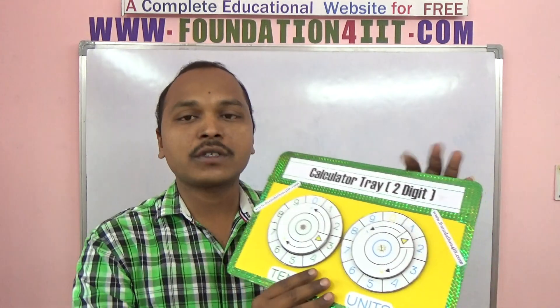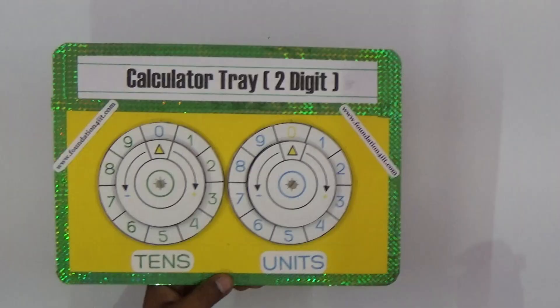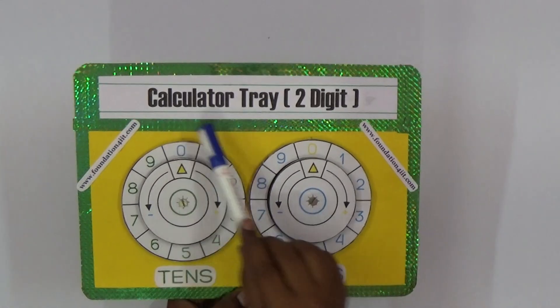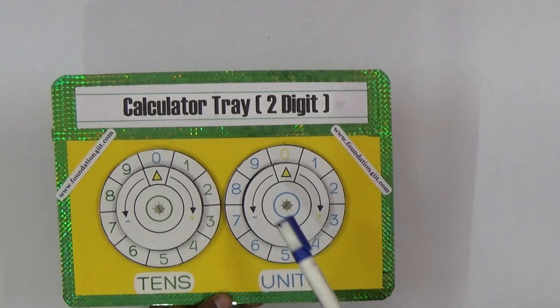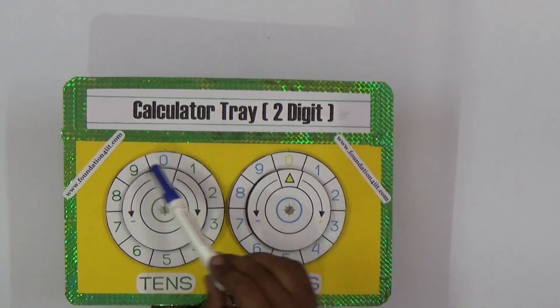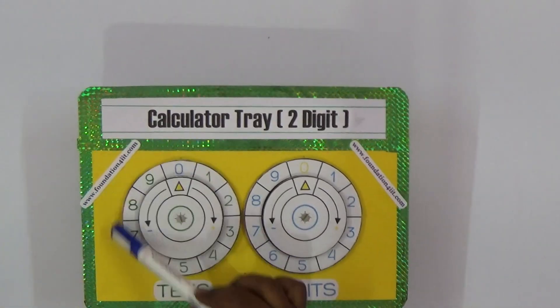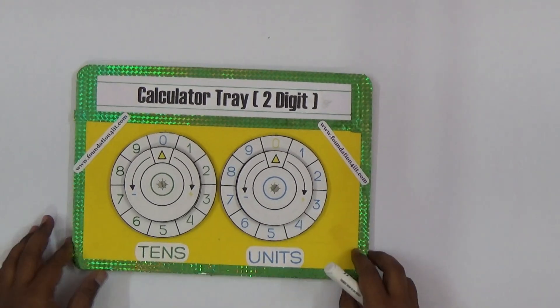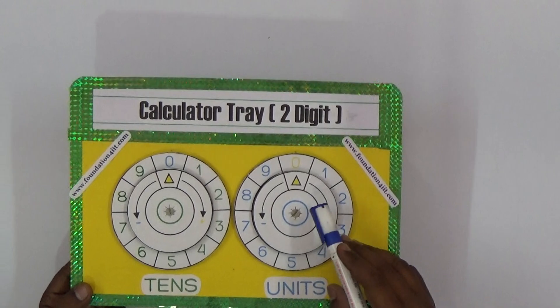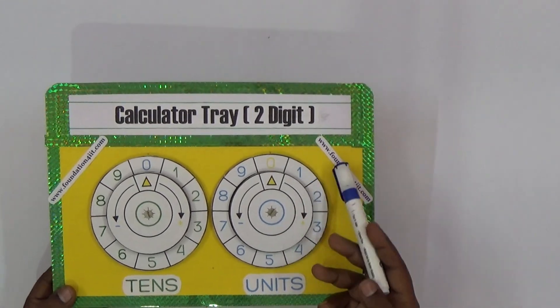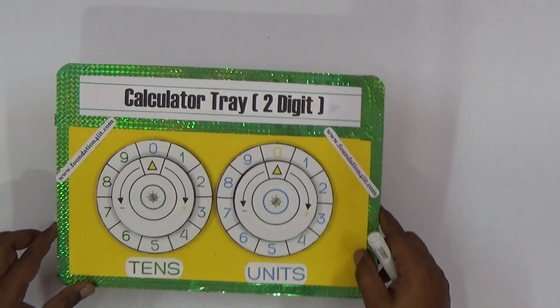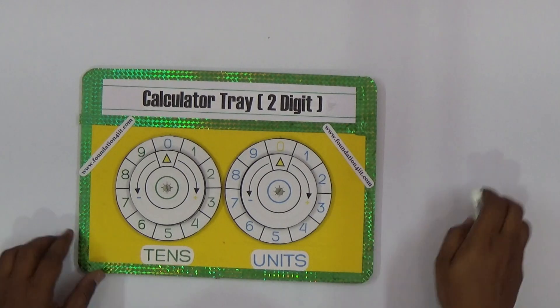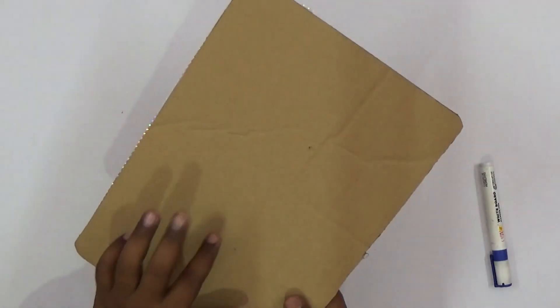Let me explain this project - what it is and how to use it. This is the calculator tray only for two digits. From 0 to 99, we can do additions and subtractions using this model. Specially for primary children, it's very helpful. They can understand the concept when they do addition of single digit to double digit.